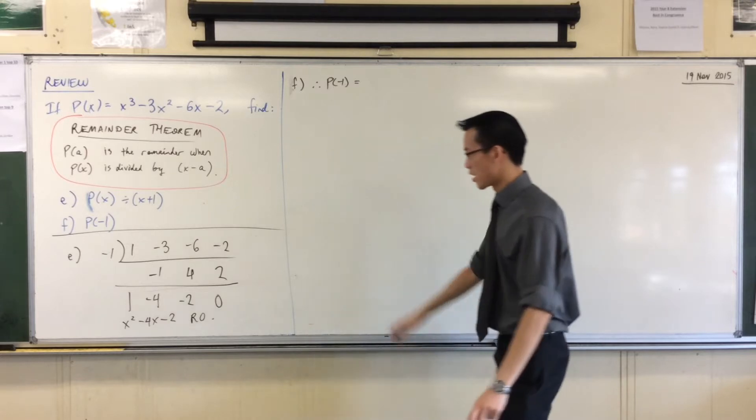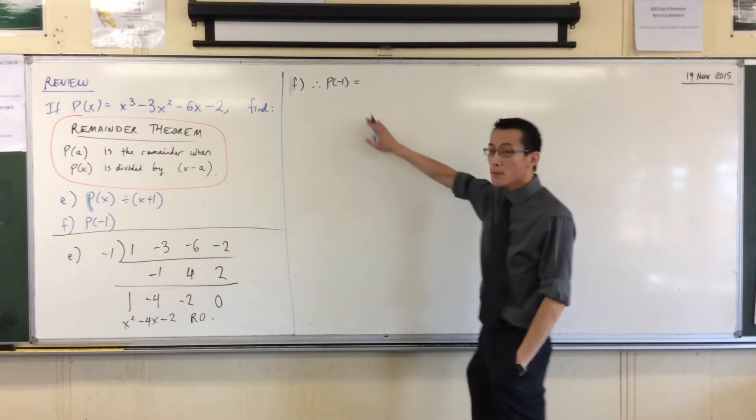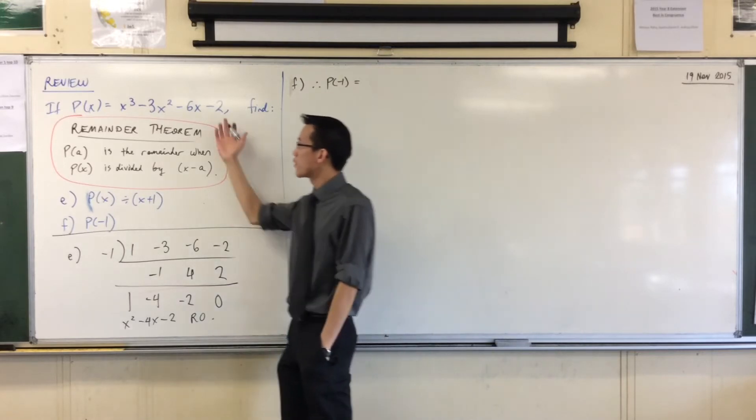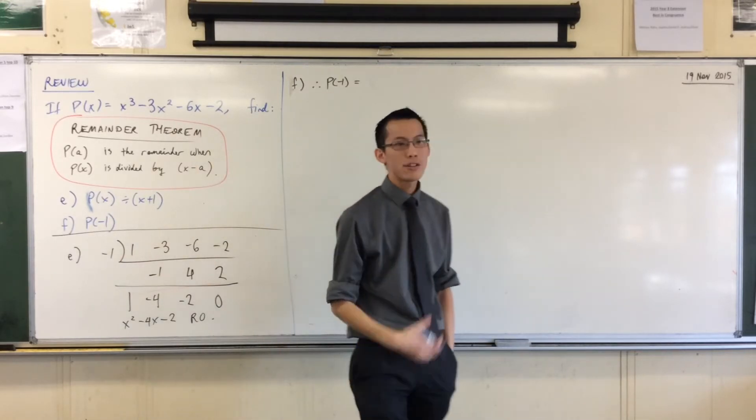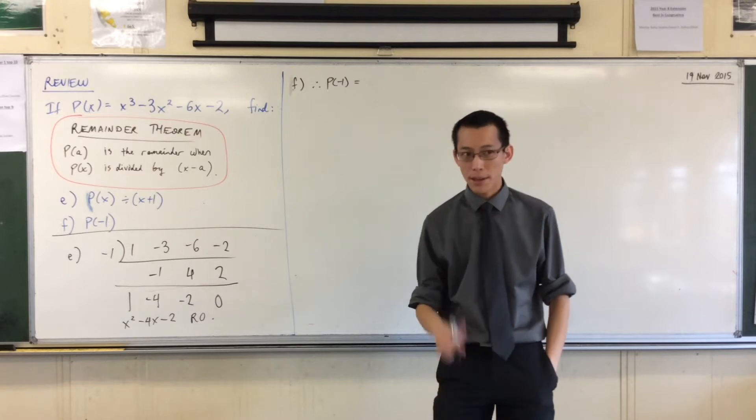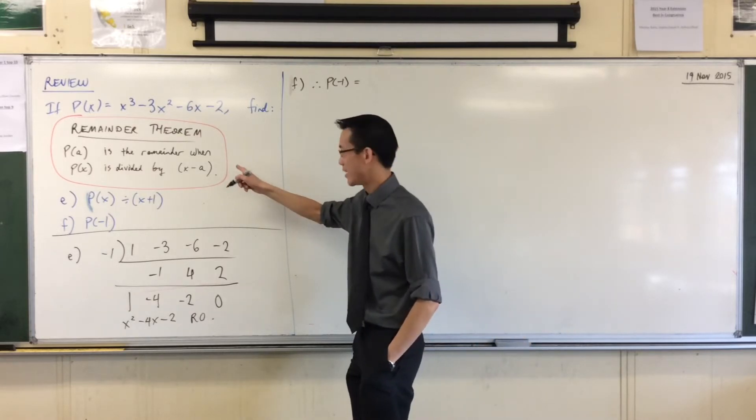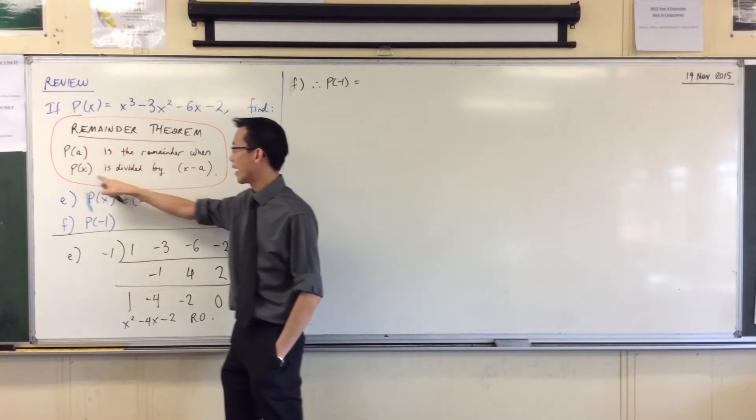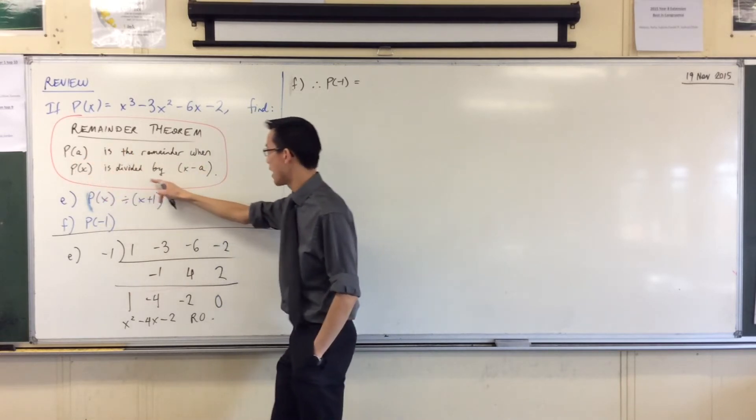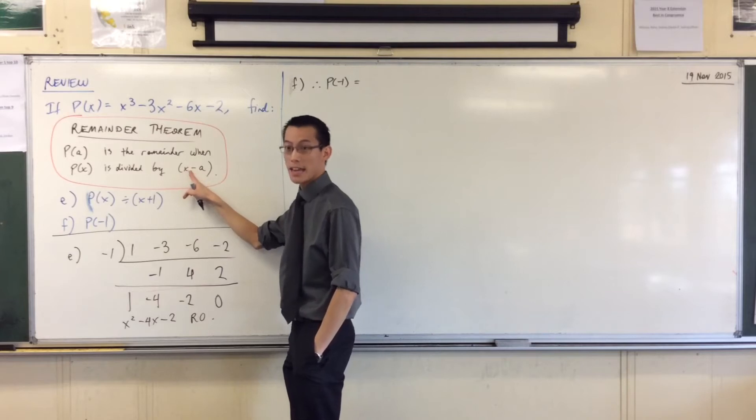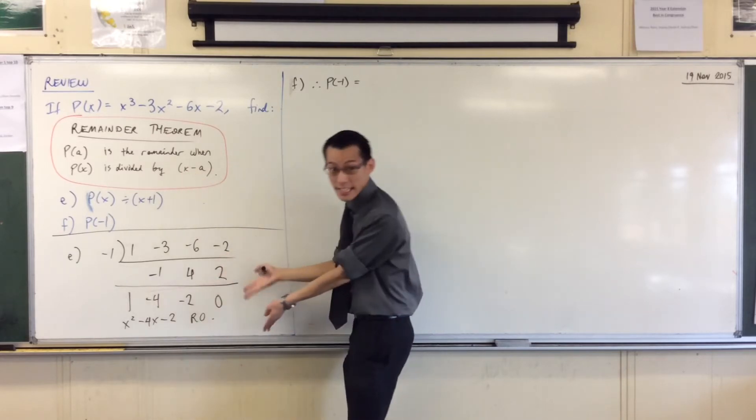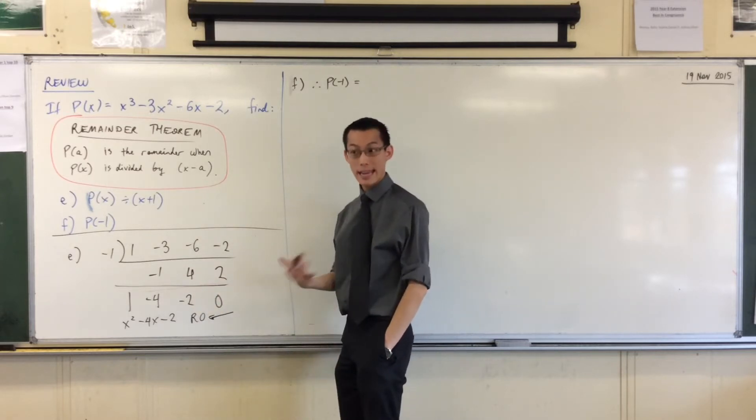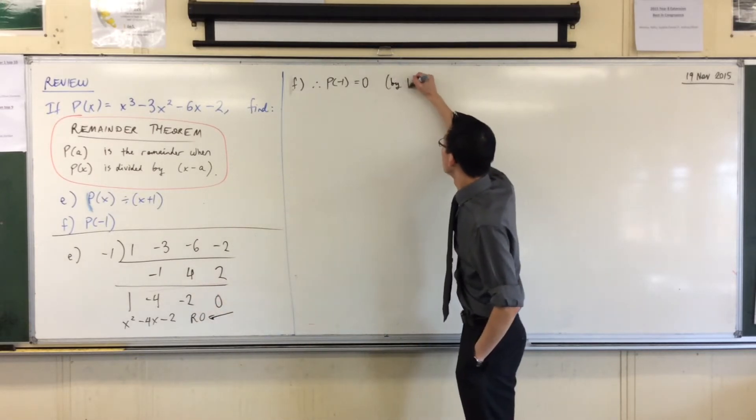Now I'm gonna let that linger for a second. I'm going to answer f without any reference to substitution. I don't need to make a substitution because the remainder theorem tells me that P of negative 1 is the remainder when that polynomial is divided by x minus negative 1, x plus 1. I just did that division. So I know what the remainder is, it's 0. So I'm just going to state it by the remainder theorem.